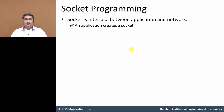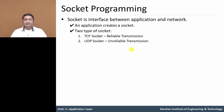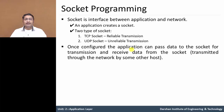There are two types of socket. The first is TCP socket, which gives reliable transmission. The second is UDP socket, which gives unreliable transmission. Once the application is configured for data transfer, it can pass the data through the socket for transmission, and on the receiving side, it receives the data from the socket in the network.